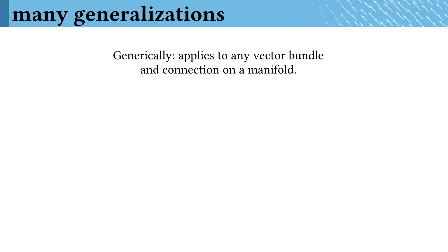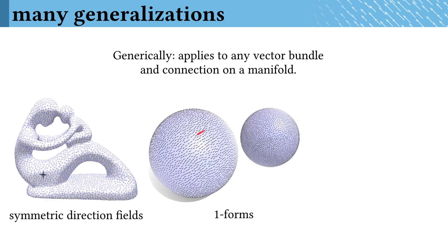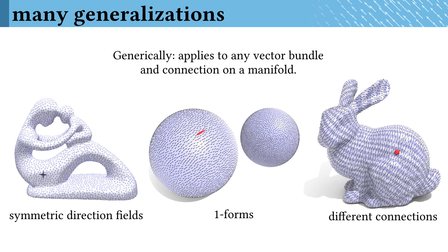Taking a step back, I've talked mainly about ordinary tangent vectors, but the vector heat method actually applies generally to any vector bundle and choice of connection on a Riemannian manifold. In the paper, we experimented with symmetric direction fields, with one-forms, and with different choices of the connection.